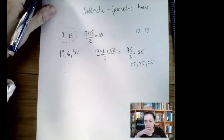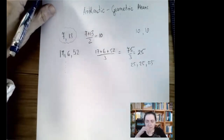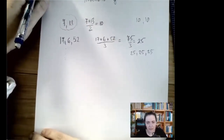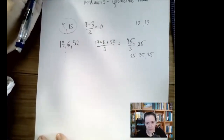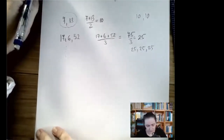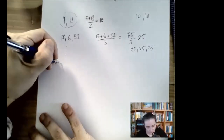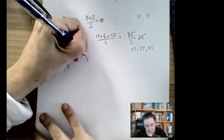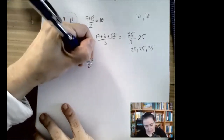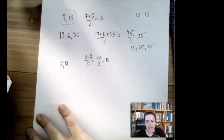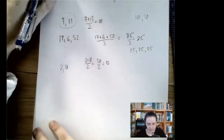So the arithmetic mean evens out the data with respect to the operation of addition. The geometric mean is very much like that, but the operation is multiplication. For example, if you look at two and eighteen, the arithmetic mean is easy: two plus eighteen divided by two equals twenty over two, which is ten. But what would be the geometric mean?